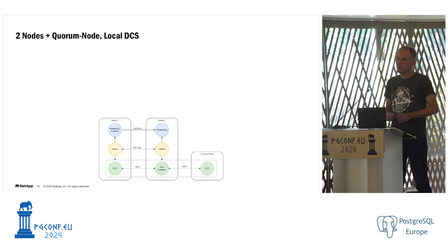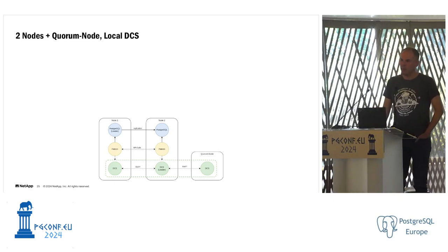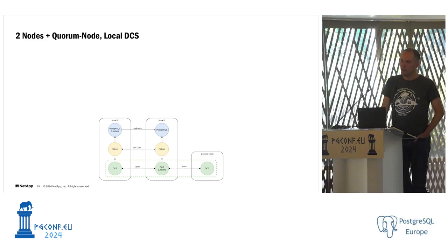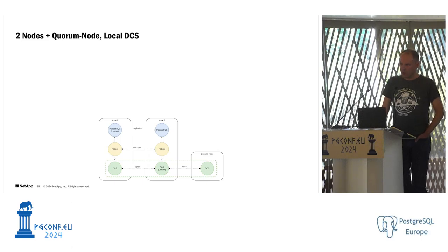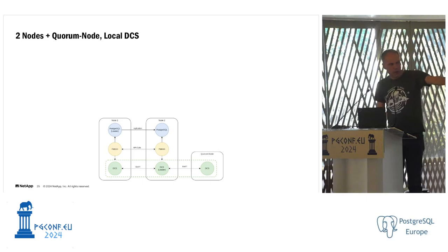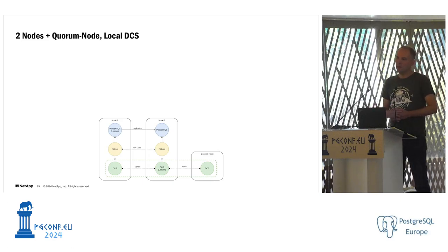Q&A: When talking about 'leader,' is that the Patroni leader or Postgres leader? In this context it's the Postgres leader. Patroni doesn't really have a leader — every Patroni process manages its own local node. If the local node is the Postgres leader, you could call it the Patroni leader, but there's no formal notion. Each Patroni node monitors the local Postgres instance, manages it, and talks to the DCS to figure out general cluster configuration.